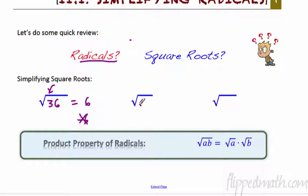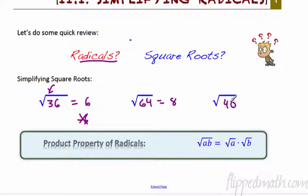Let's do another example. Square root — or radical — of 64. What do you think? That's 8. Next one: square root of 40. A lot of kids will throw out 20 because their brains will start freezing. No, it's not 20. It's somewhere between — 6 times 6 is 36, so 6 squared is 36.